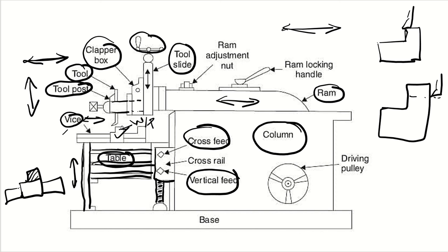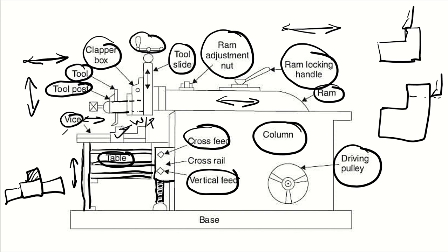When you don't want the reciprocating motion, you can lock the ram using a ram locking handle and ram adjustment notch. Inside the column, a driving wheel or driving pulley is provided to drive the gears. The entire assembly is mounted on a base. This is the schematic of a shaper machine. In the next video, we will discuss the crank and slotted lever mechanism — the mechanism of a shaper.